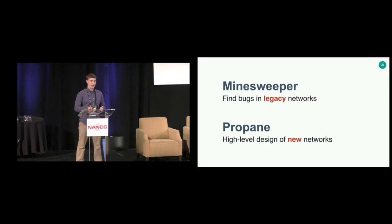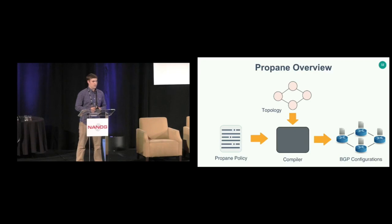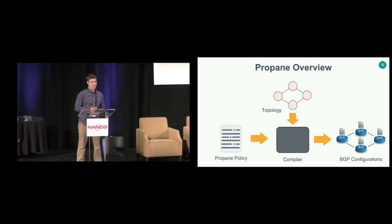The second tool is called Propane, and it takes a very different approach. It asks: why are we still writing configuration files in this low-level assembly-like language? Why not have a higher-level language where you describe only the intent of the entire network and then generate configurations that you know are going to be correct? At a high level, Propane takes a network-wide routing policy, feeds it to the Propane compiler along with the network topology, and the compiler generates configurations that run on unmodified vendor hardware — specifically targeting BGP configurations because it's a very flexible routing protocol.